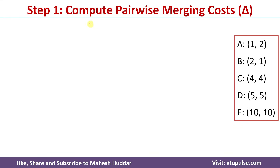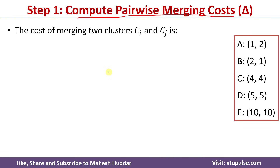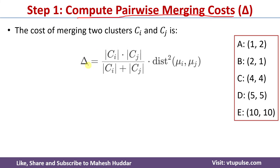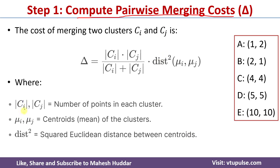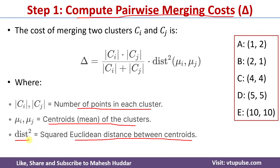In the first step of the WOTS clustering algorithm, we need to compute the pairwise merging cost, that is delta. To find the pairwise merging cost of Ci and Cj, we use the formula: delta equals cardinality of Ci times cardinality of Cj, divided by cardinality of Ci plus cardinality of Cj, times distance squared of centroids. Distance squared is the Euclidean distance between the centroids, squared.